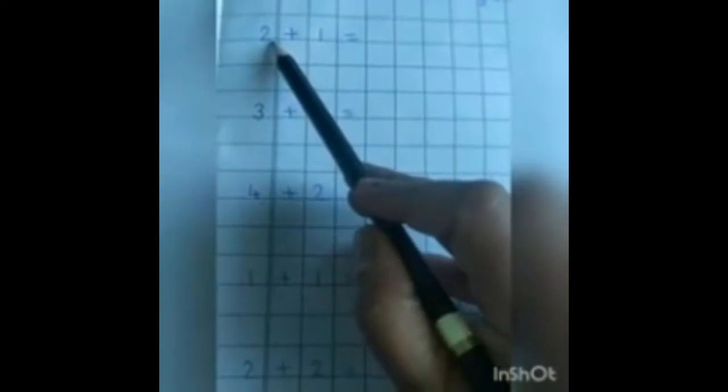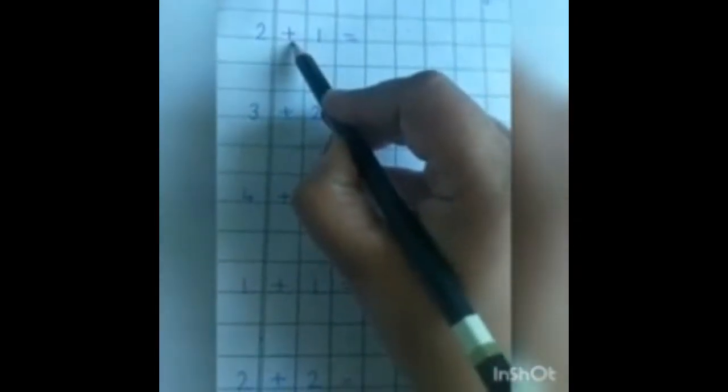Which number is this? 2. So we will put here 2 dots. After 2, which sign is this? Sign of plus. So we will put here sign of plus. Now drag your finger. Which number is this? 1. So we will put here 1 dot and sign of is equal to.